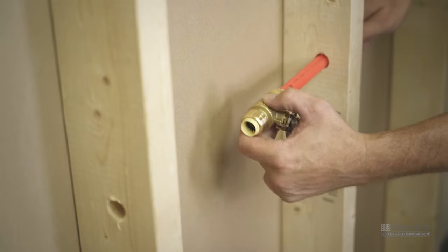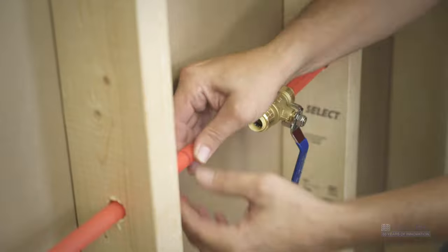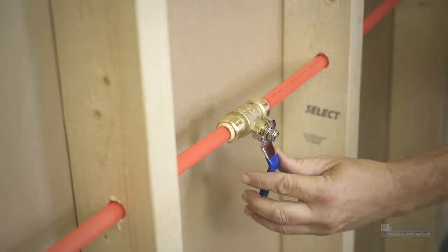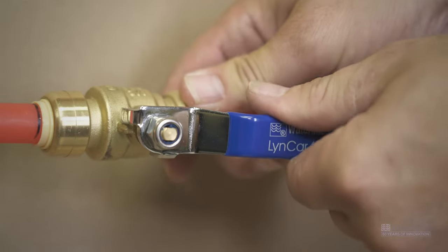Push the fitting onto the pipe until you reach the insertion line you've marked on your pipe. Finally, you can now turn your water supply on and inspect the connection for any leaks.